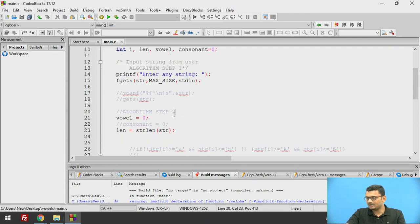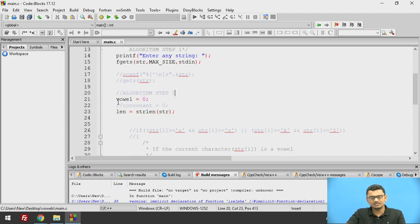Now we come to the second step of the algorithm. Here we initialize the variable vowel as 0 and I want to scan the string from 0, that is the start of the string, till the end of the string. The end of the string will be stored in len. So strlen is an inbuilt function in string.h which helps us to find the length of the string.